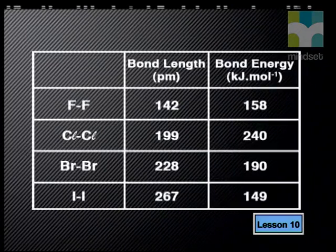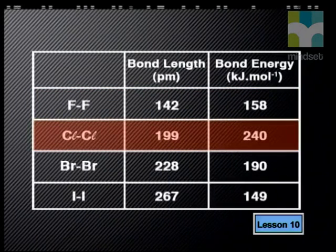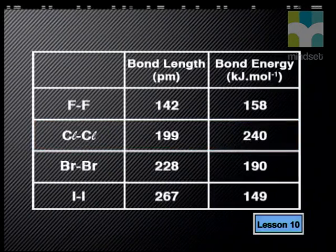Let's look at the values chemists have determined. Here's a surprise: you would expect bond energy to be highest for fluorine with the shortest bond length, but it isn't — it is highest for chlorine, which has the second smallest bond length. The bond energy does decrease as bond length increases for bromine and iodine, but fluorine doesn't fit the general trend. Fluorine is the most reactive non-metal on the periodic table. The fluorine molecule is unstable and requires very little energy to break the fluorine–fluorine bond, which may explain why fluorine is an exception to the general trend that bond energy decreases with increasing bond length.